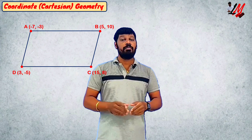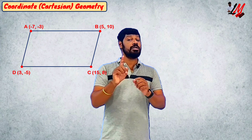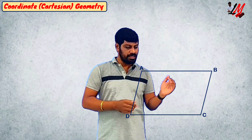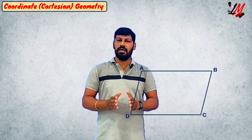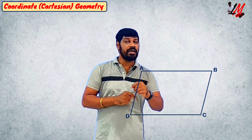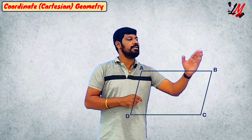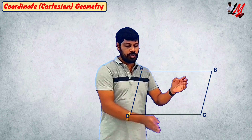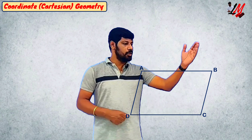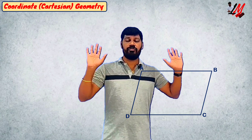The important thing we need to recall: just imagine a parallelogram A, B, C, D. We have to recall the idea that AB is equal to CD, and AD is equal to BC.